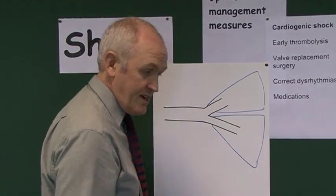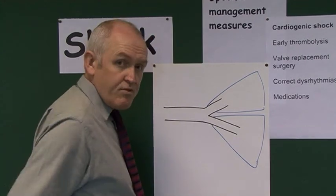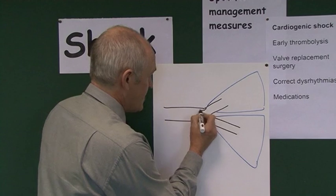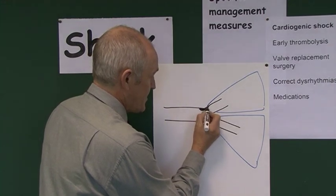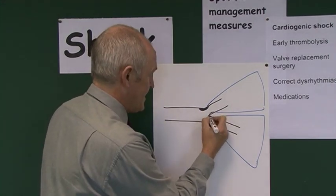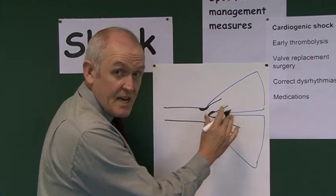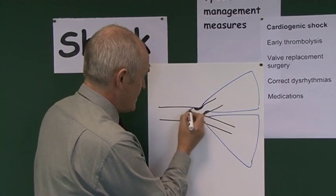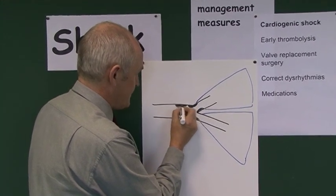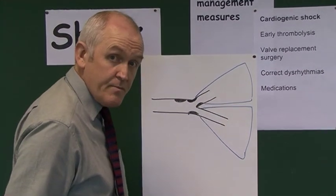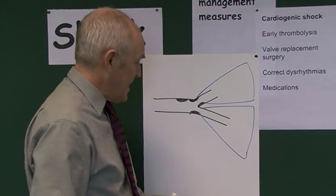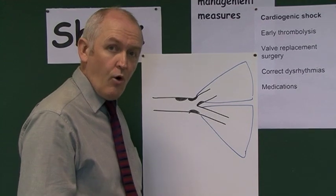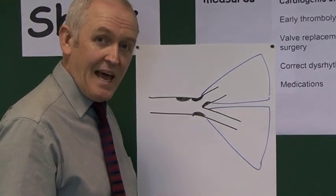One of the problems in Western societies is that atheroma starts accumulating — very often at the bifurcation of arterial branches. We develop this fatty atheroma, and if it becomes unstable and the surface ruptures, the thrombogenic core of the atheromatous plaque is exposed.